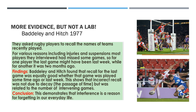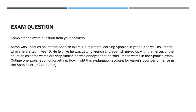Make sure you've got details down of this study, along with notes around the McGeoch and MacDonald study and Burke and Squill. Now we need to practise. Here is the question: Aaron was upset that as he left the Spanish exam, he regretted learning Spanish in year 10 as well as French, which he started in year 9. He felt like he was getting French and Spanish mixed up, as some of the words are very similar, and was annoyed that he said French words in the Spanish exam. Outline one explanation for forgetting and how this explanation might account for Aaron's poor performance.